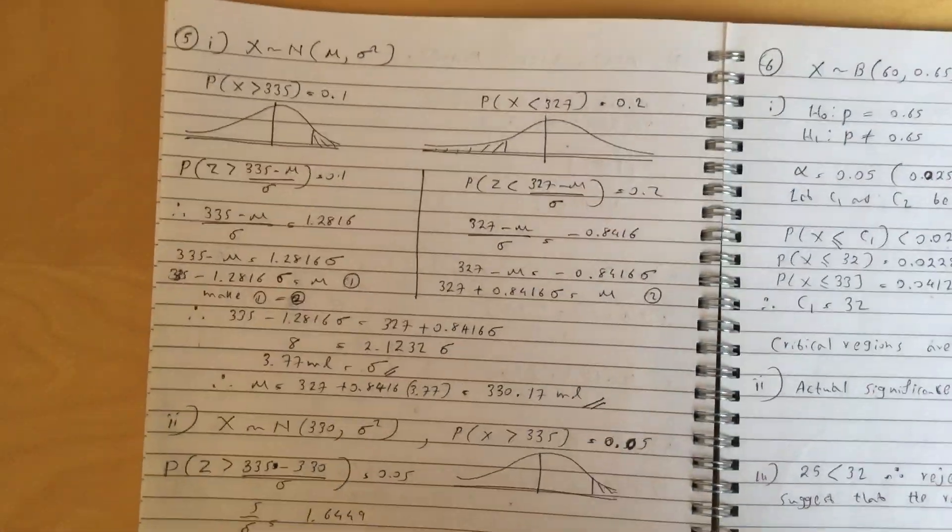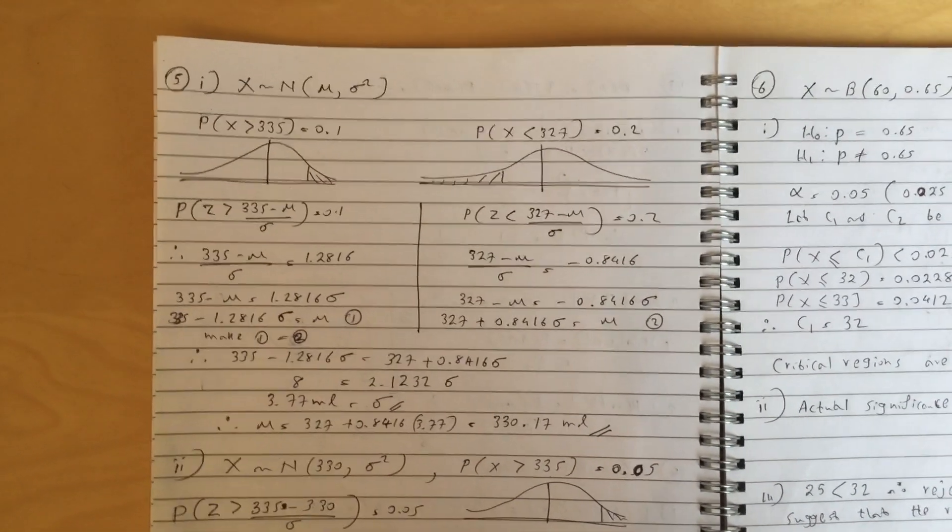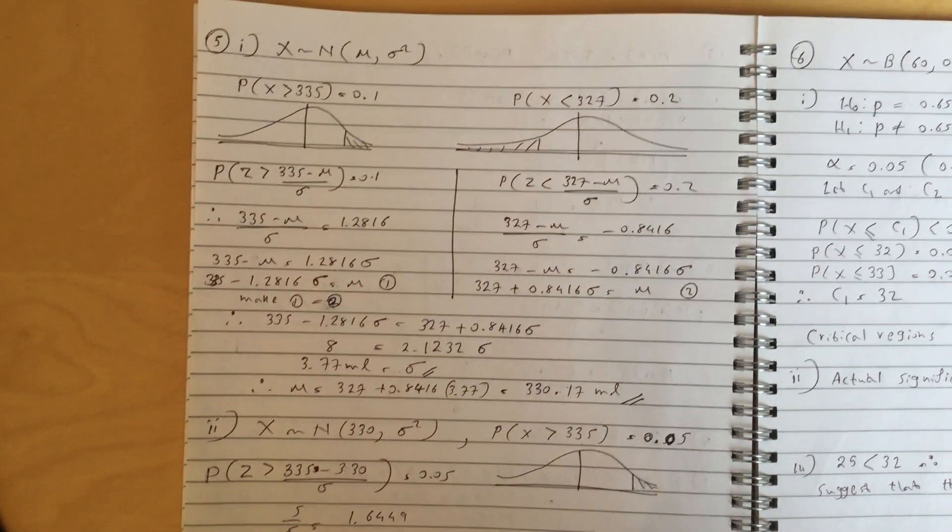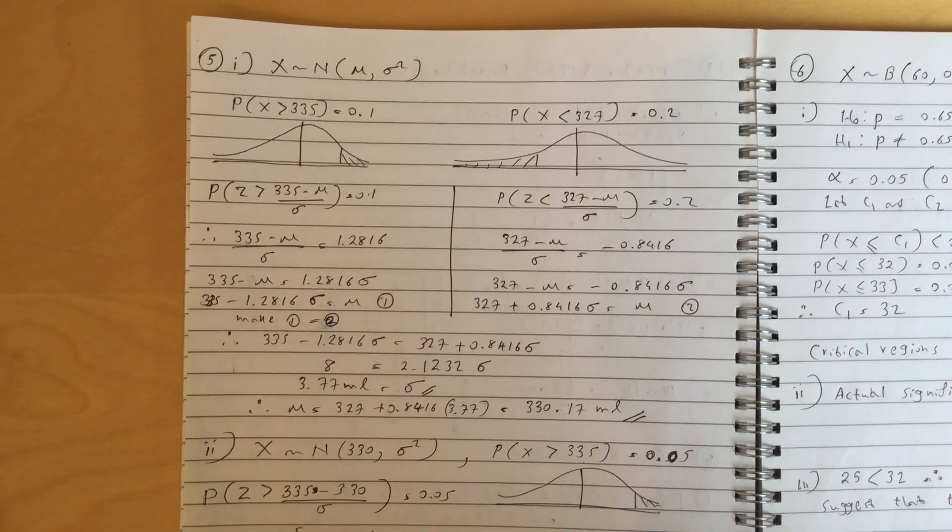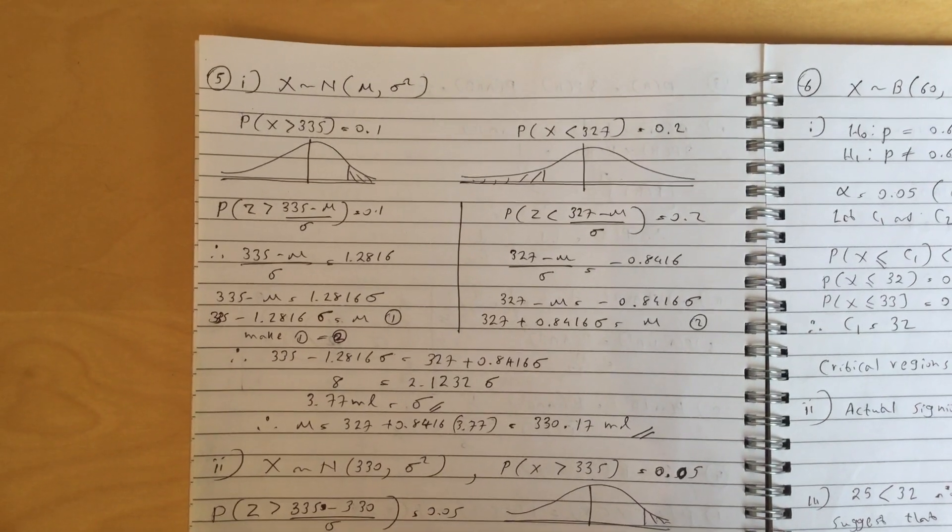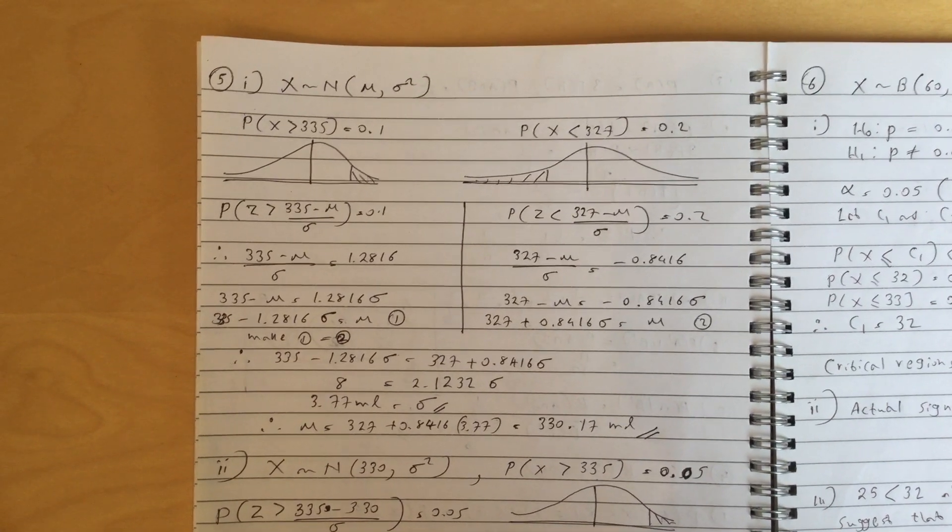Question 5 part 1, you just write the equation separately and you work out the values of mu and sigma. Sigma equals 3.77 and mu equals 330.17.